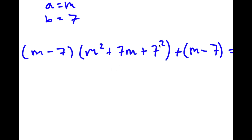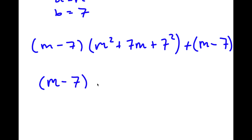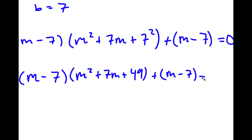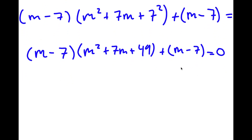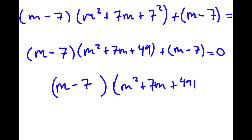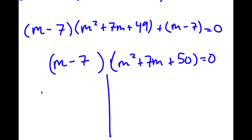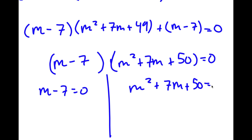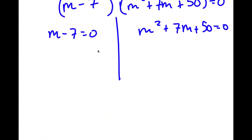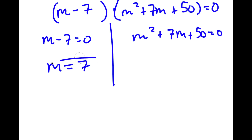Now, 7 squared is 49. So I have (m minus 7)(m squared + 7m + 49 + 1), which equals (m minus 7)(m squared + 7m + 50) is equal to 0. So now this gives me two equations: m minus 7 equals 0, and m squared plus 7m plus 50 equals 0. From m minus 7 equals 0, I get m equals 7 — so this is already one solution.